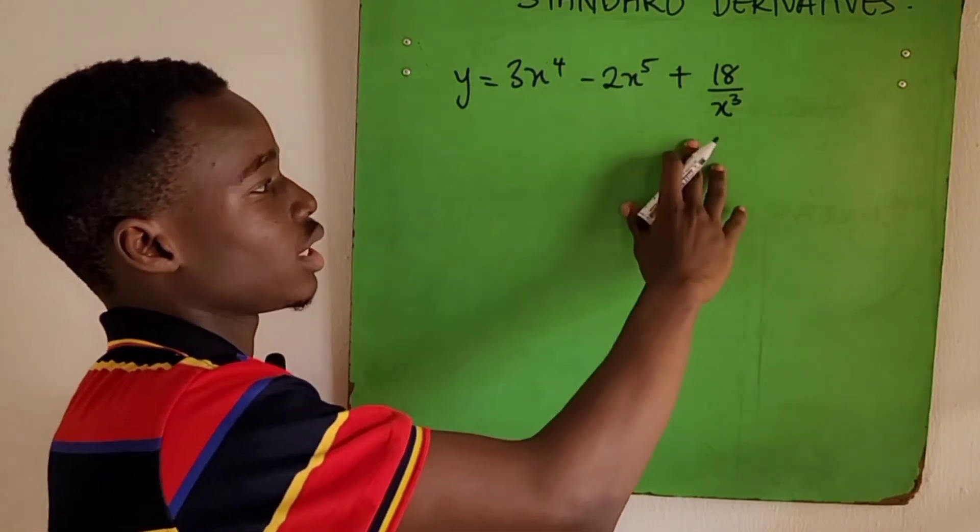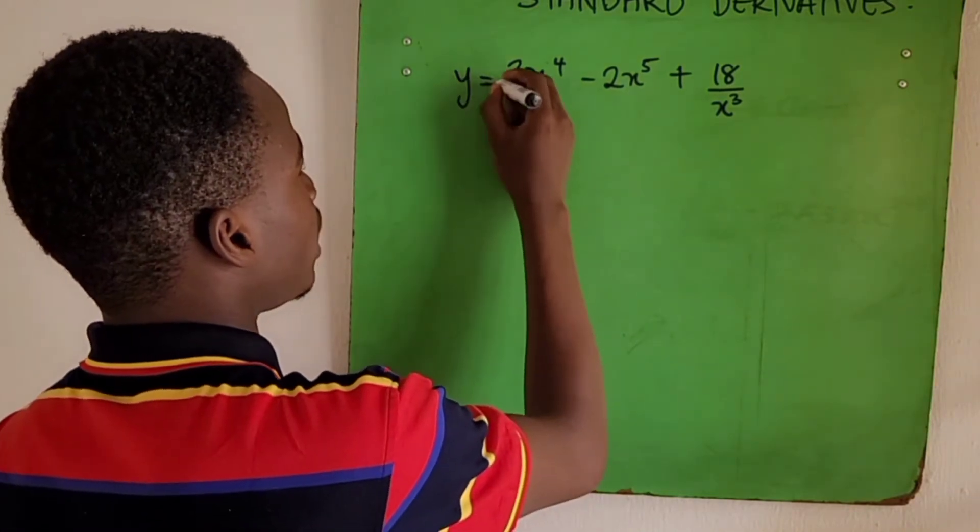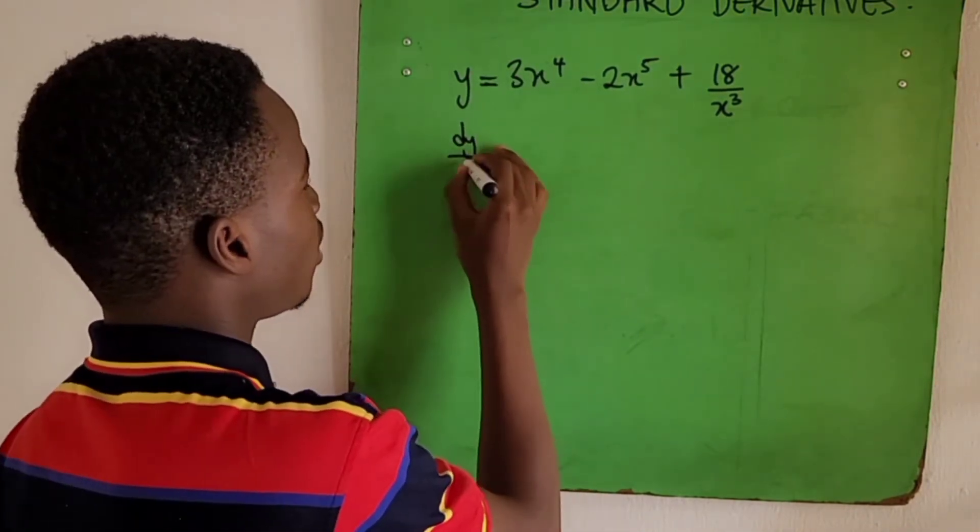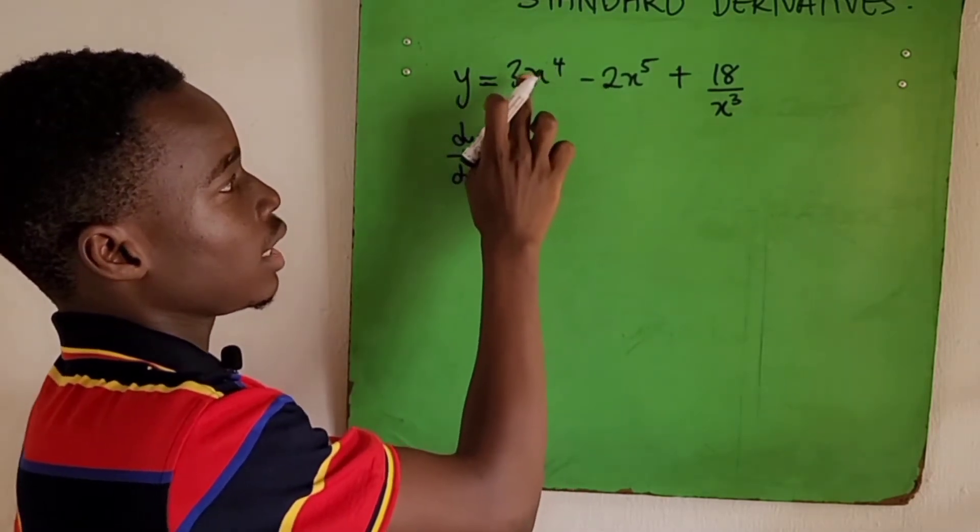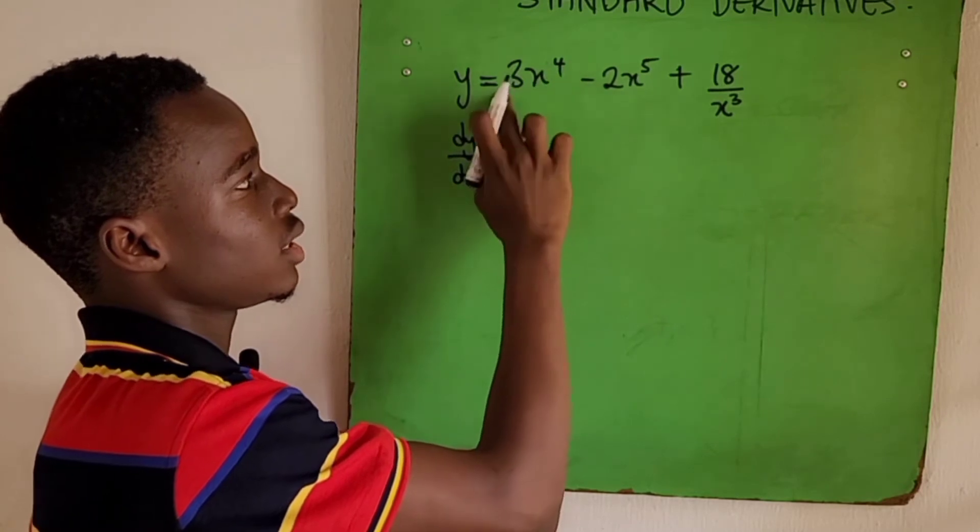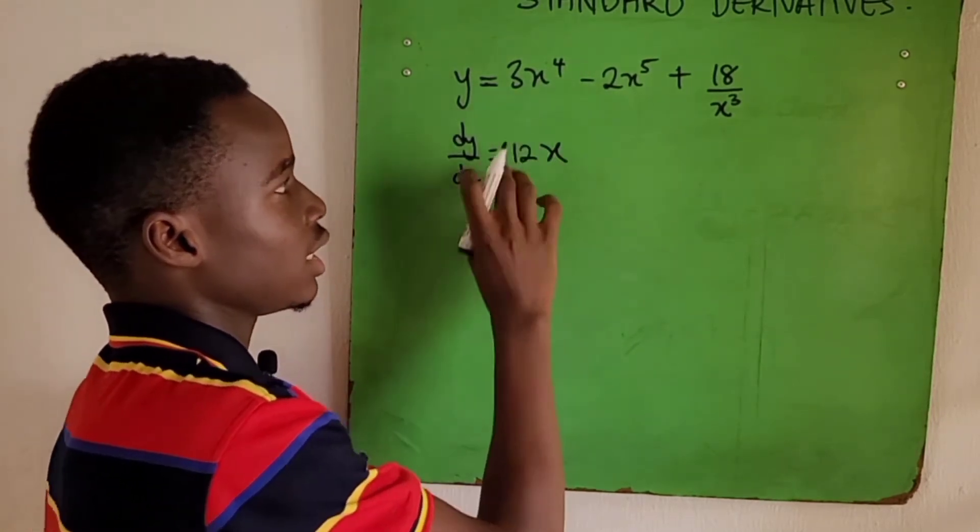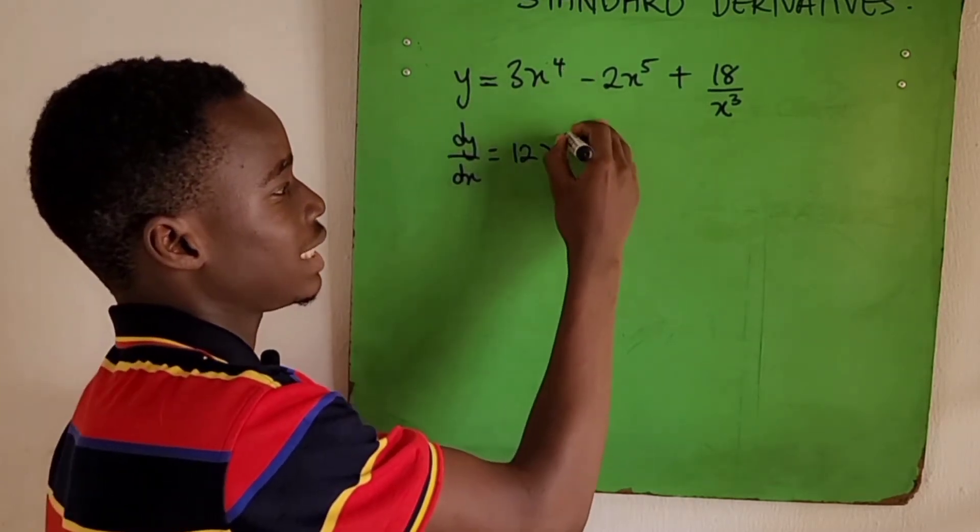Moving to the next example, we have this function. Now we've been asked to find the derivative dy/dx. In solving this we'll take them individually. So dy/dx for this, remember a times n: 3 times 4 is 12, then we have our x, then the power will be n minus 1, which is 4 minus 1, giving us 3.